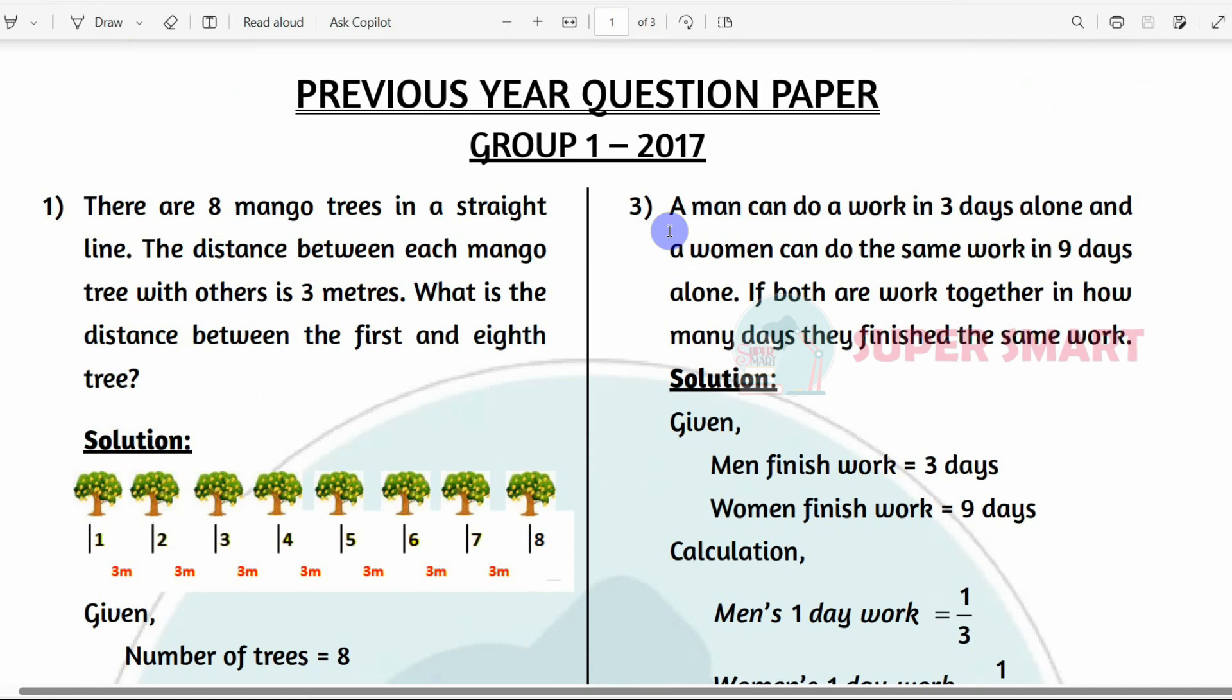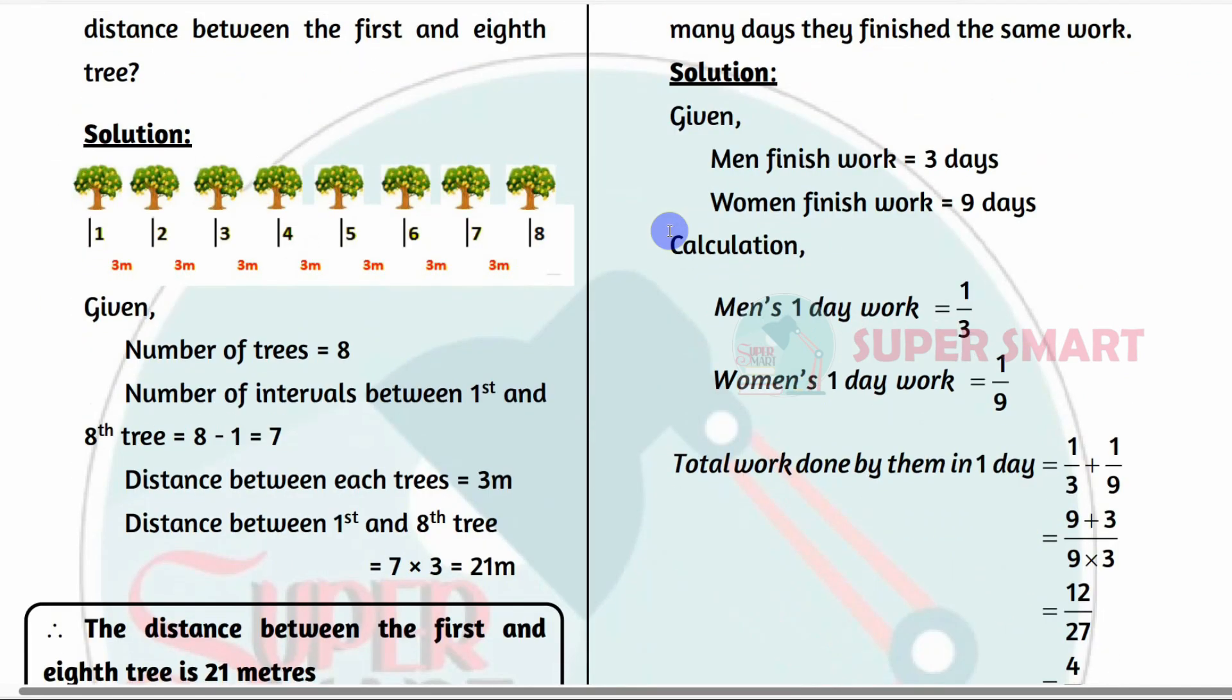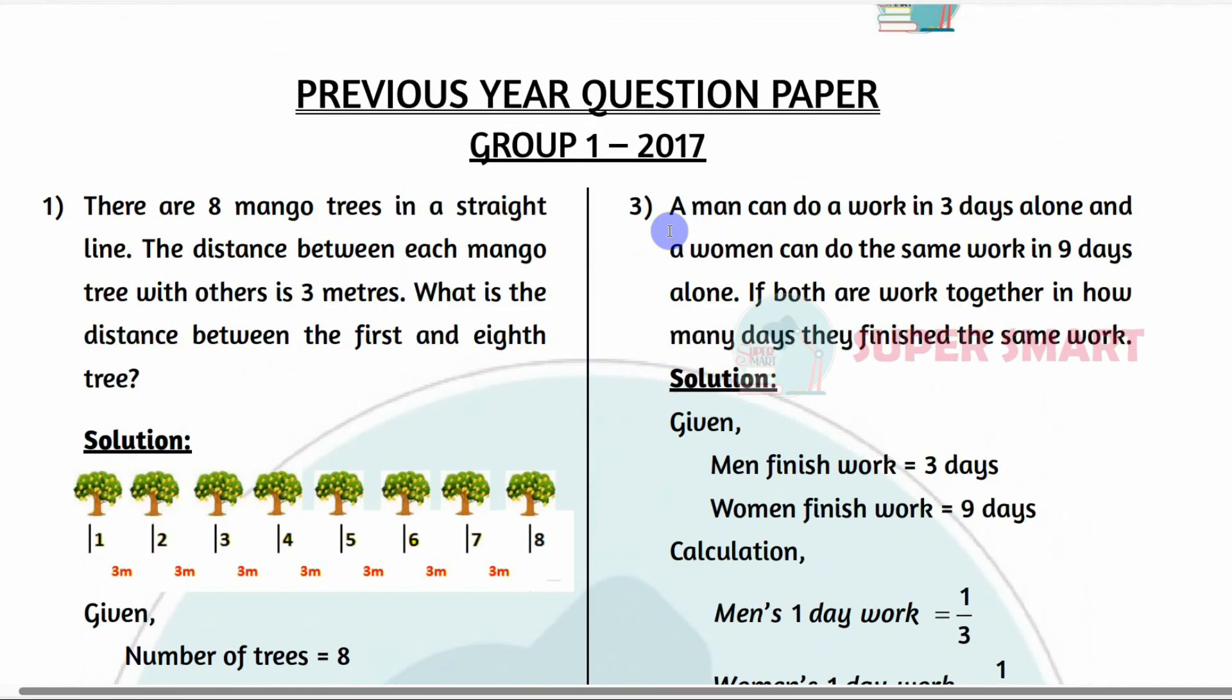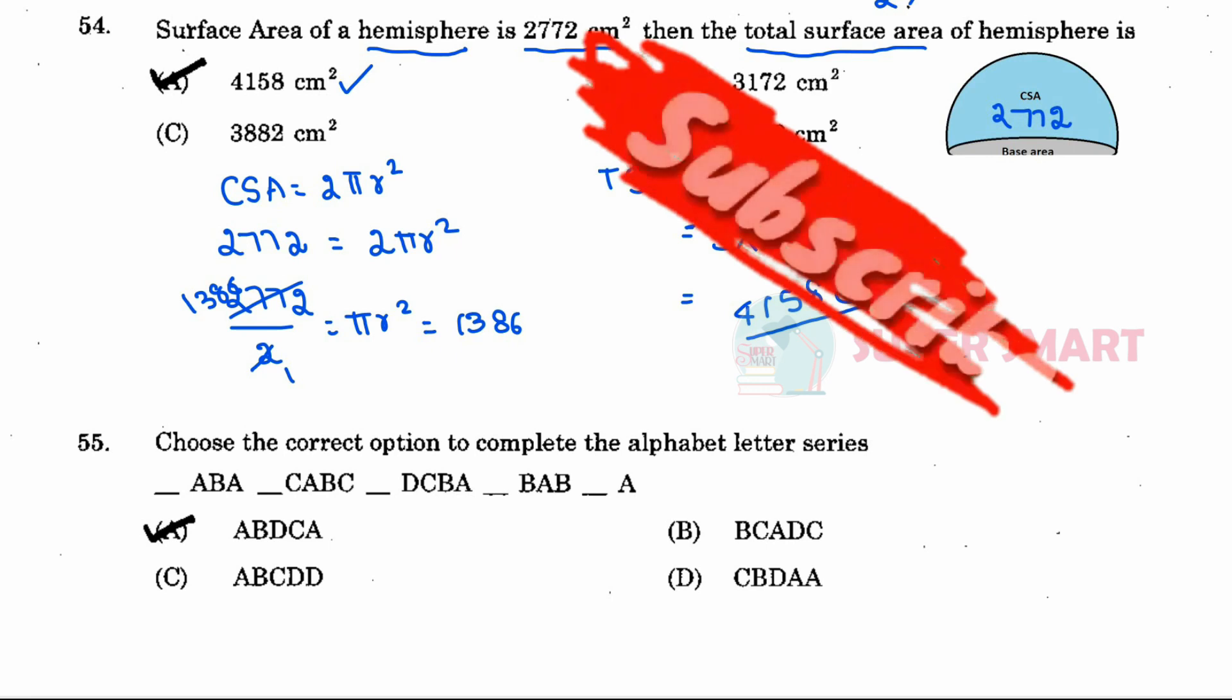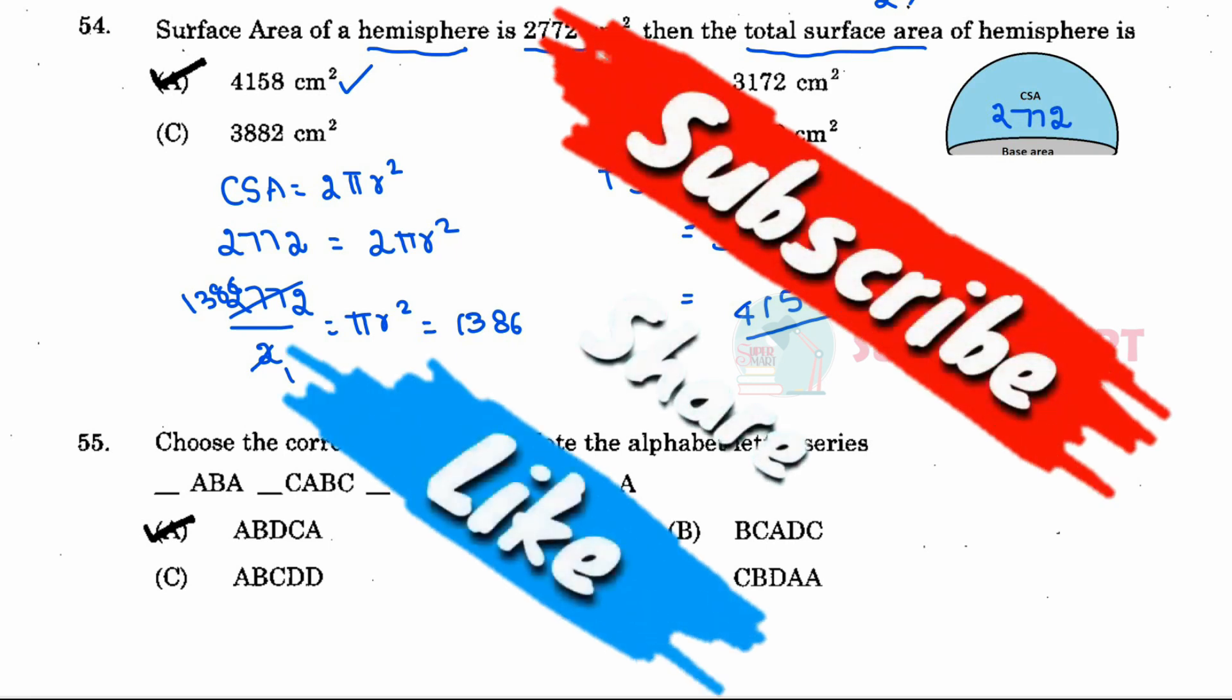If you want the complete Group 1 2017 question paper, please check the description box below where you can purchase all 50 questions with solutions. In the next video, we will see more solutions. Please like, share, and subscribe to our channel. Thank you.